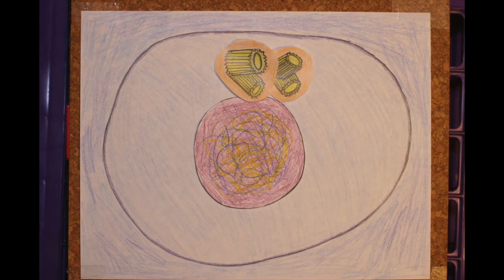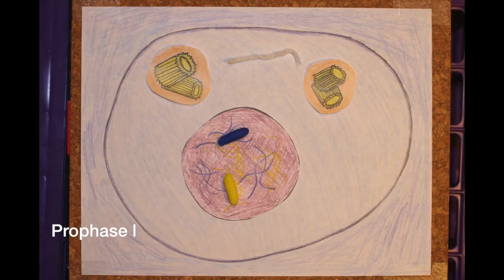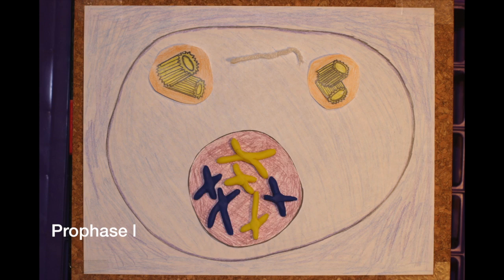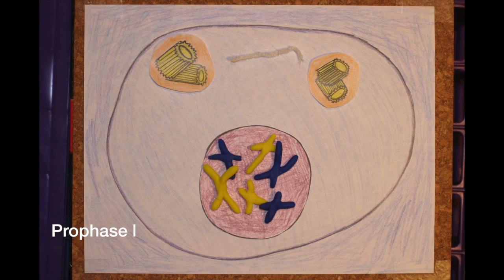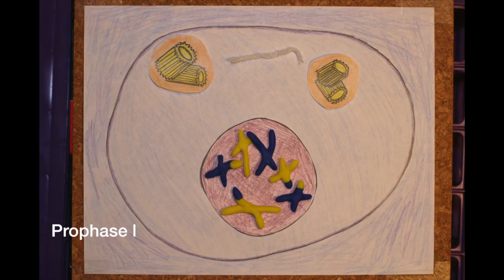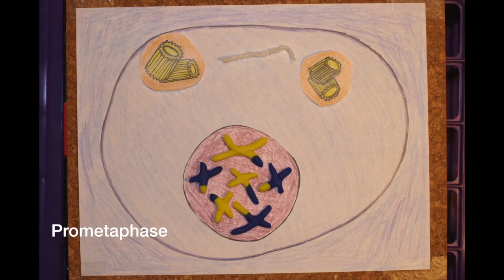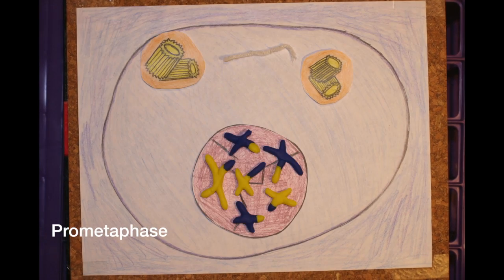The first stage of meiosis is prophase one, where the chromatin within the nucleus begins to condense and eventually form chromosomes. Crossing over between non-sister chromatids may occur. The cell then enters prometaphase, where the nuclear envelope breaks down.